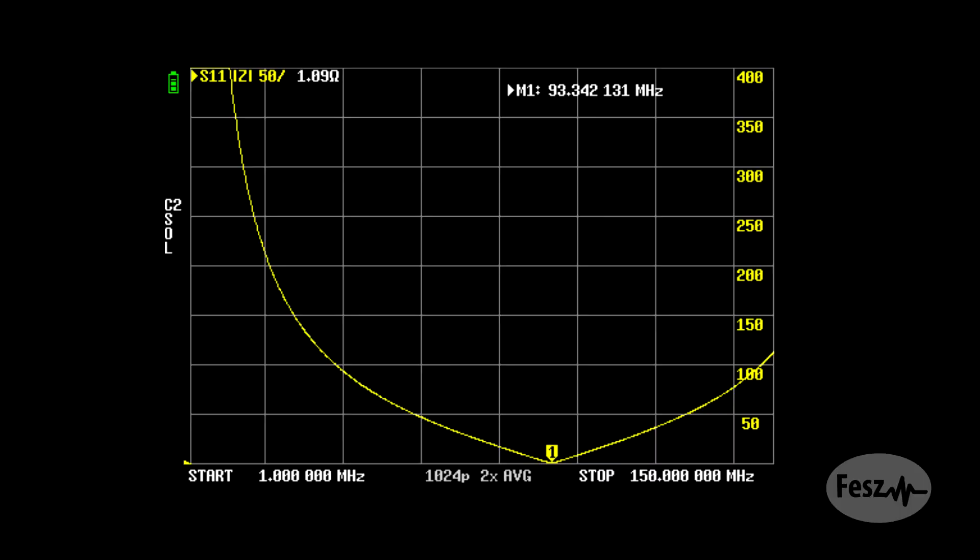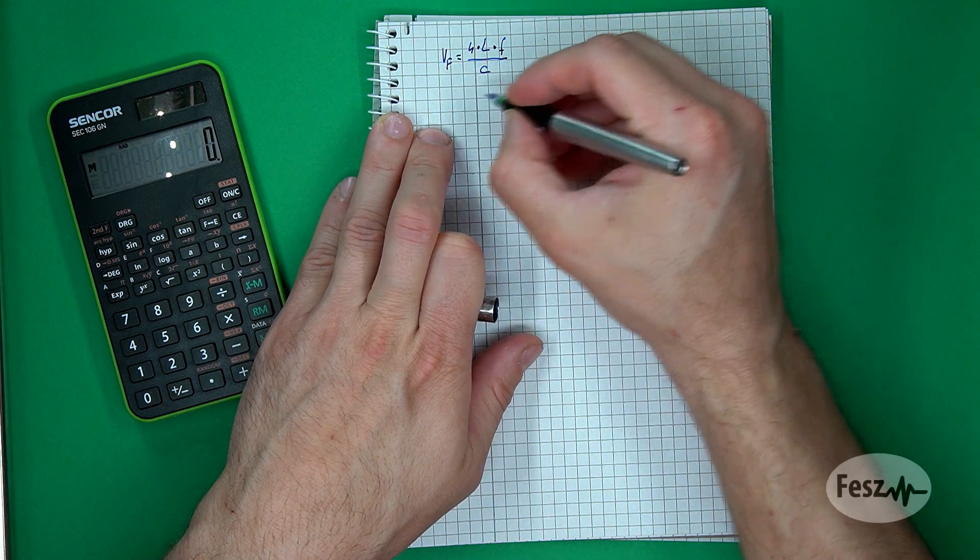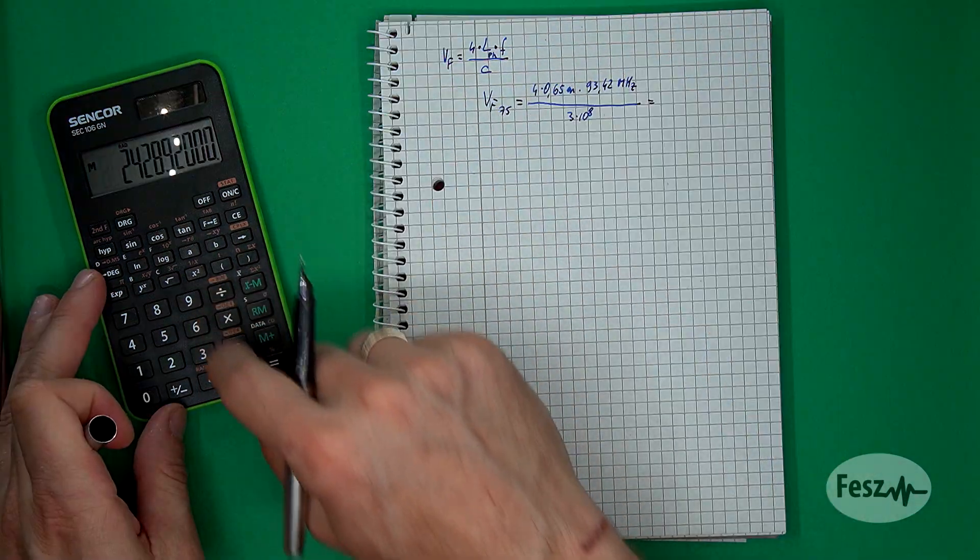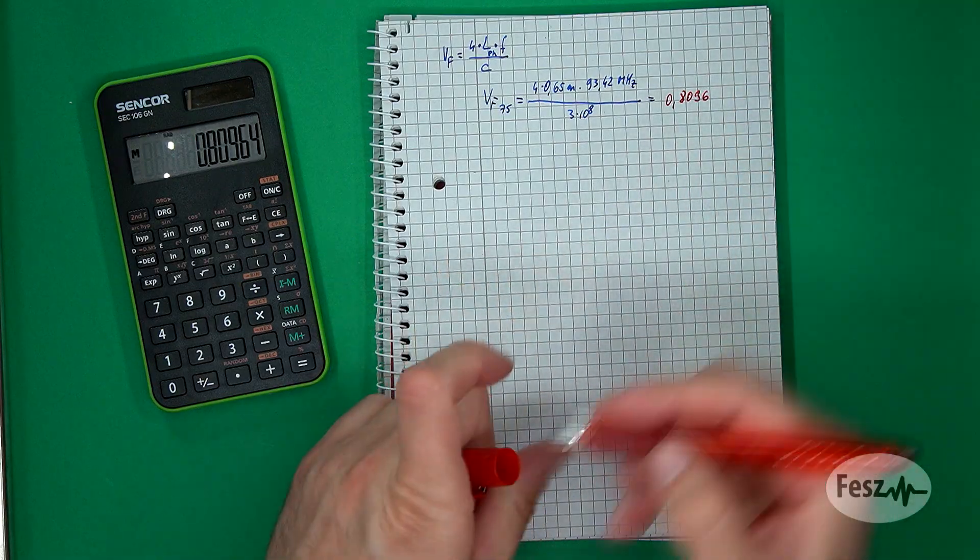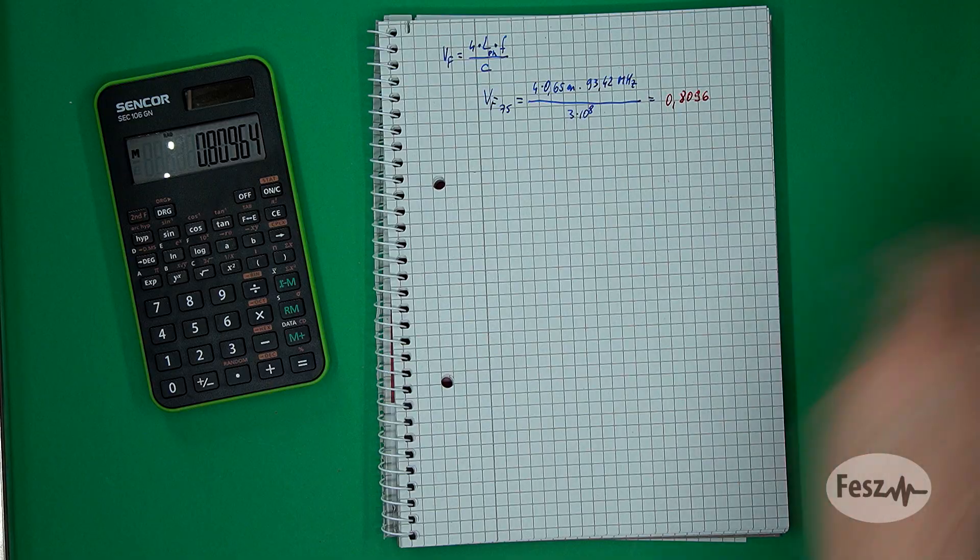One way of determining the exact velocity factor of a known length of cable is to measure its impedance using a VNA. If one end is an open circuit, the impedance as seen from the other side will be a short circuit at the frequency at which the cable is a quarter wavelength long. In this case, a 65 cm open-ended 75 ohm cable presents a zero ohm impedance at 93.42 MHz. Knowing the cable length and this frequency, you can determine the exact velocity factor, which for my cable is 0.8096.